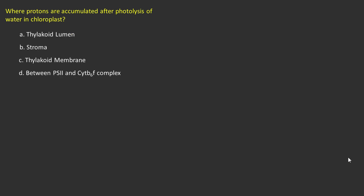Now let's see the next set of questions. Where protons are accumulated after photolysis of water in chloroplast? Options: Thylakoid lumen, stroma, thylakoid membrane, between PS2 and cytochrome B6F.